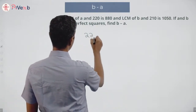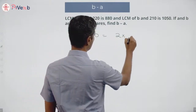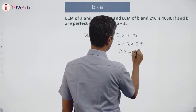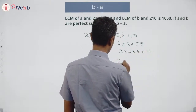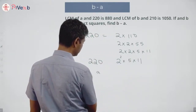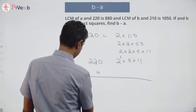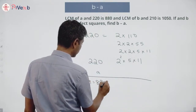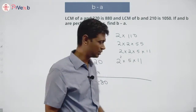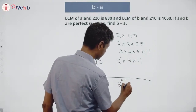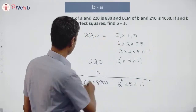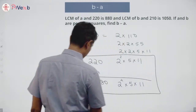Let's take 220 and prime factorize it: 220 = 2 × 110 = 2 × 2 × 55 = 2 × 2 × 5 × 11 = 2² × 5 × 11. Now 880 is 220 × 4, so 880 = 2² × 5 × 11 × 4 = 2⁴ × 5 × 11.